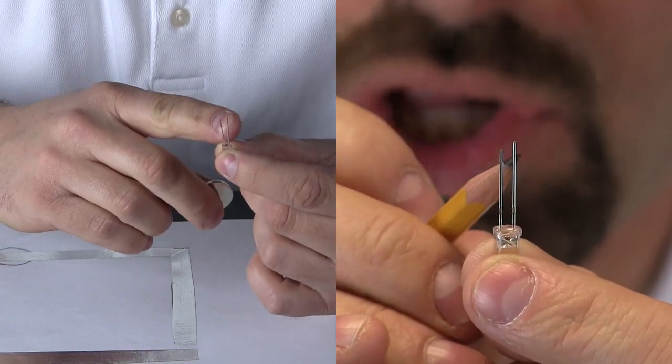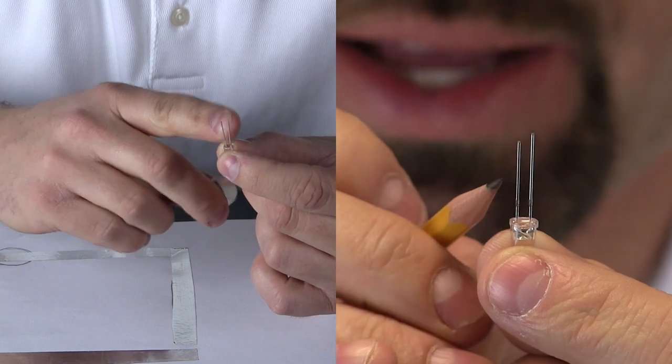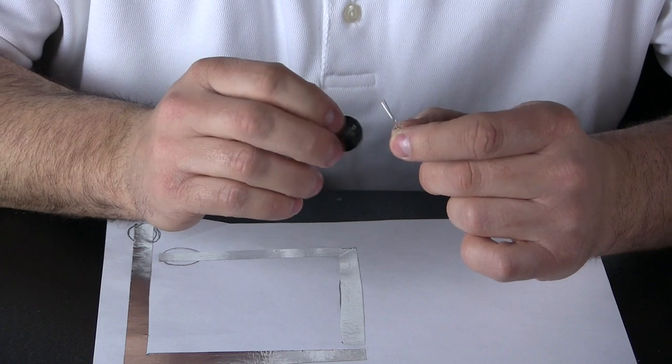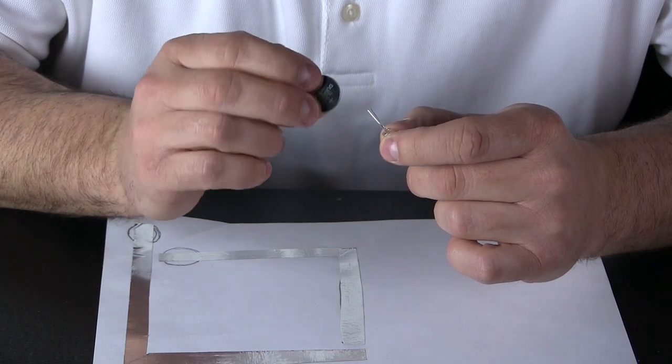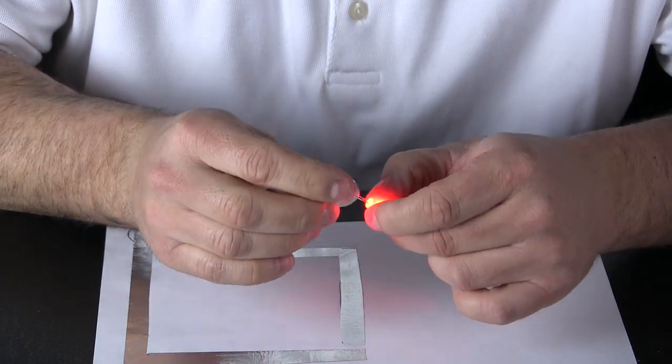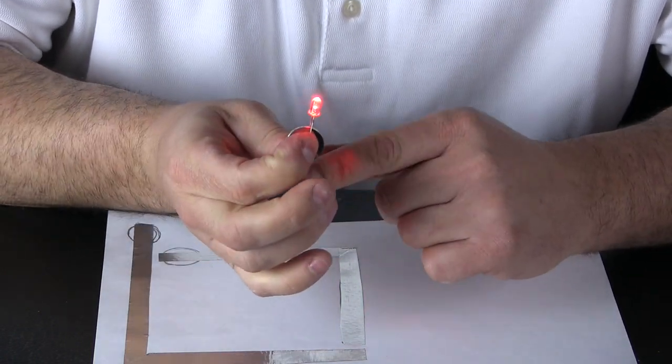If I hold the light bulb up you will notice one wire is longer than the other one. Well that longer wire is the positive side. Watch what happens when I match the positive wire of the light bulb to the positive side of the battery and the negative to the negative. When I slide it on correctly my light bulb lights up.